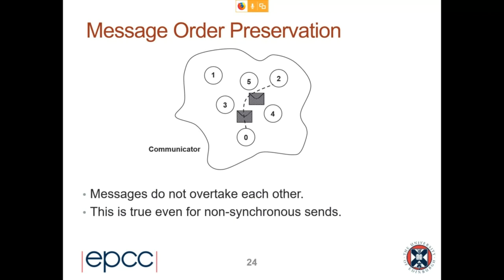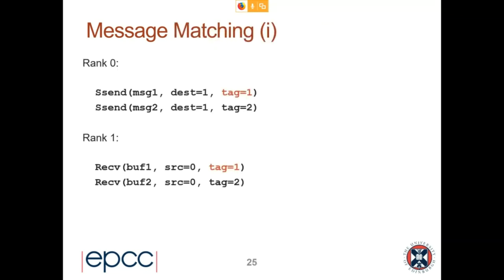Another important MPI feature from the standard is message order preservation: messages do not overtake each other, even for non-synchronous sends. However there's an important caveat — this is only true between the same two processes. For any two processes, messages between them will never overtake one another, whether synchronous or asynchronous.